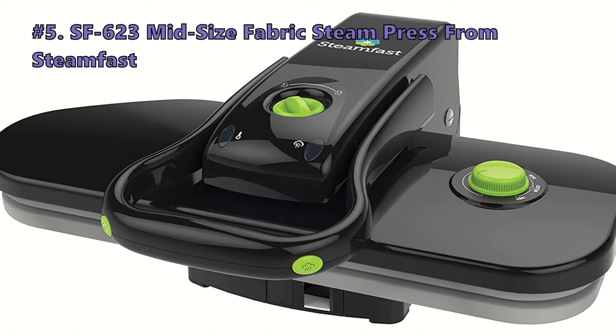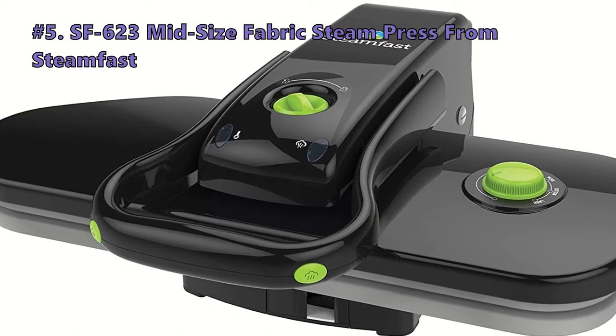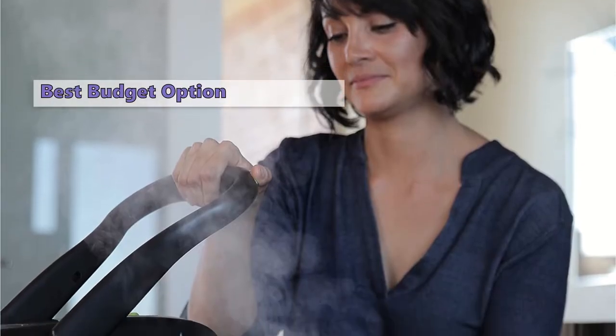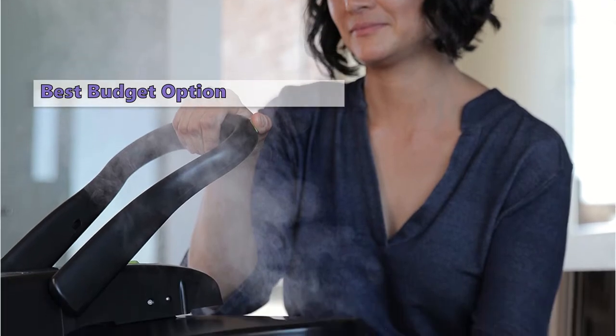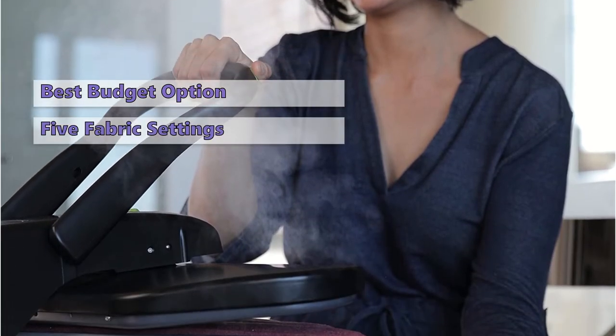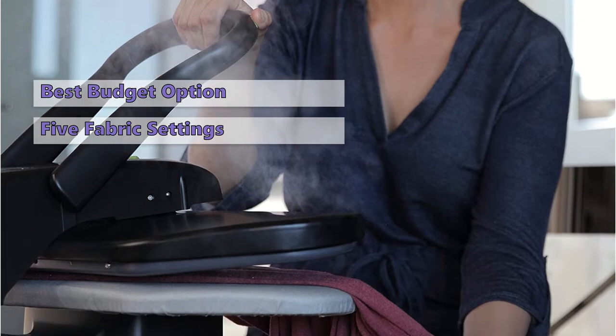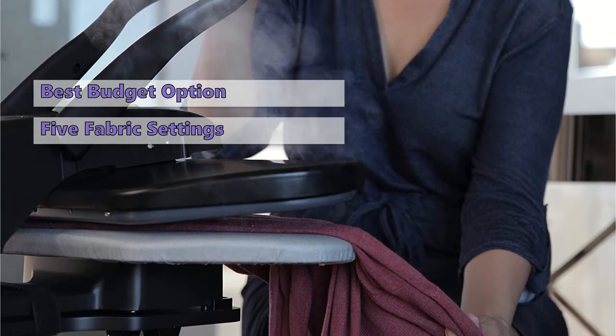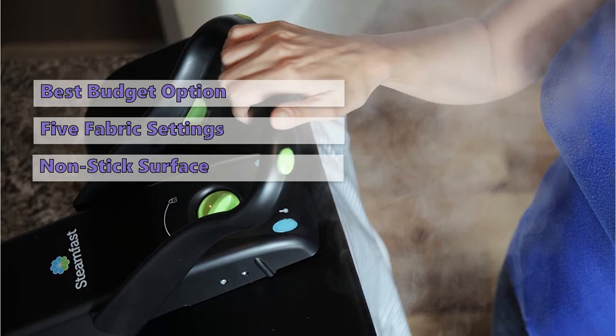We start out the list with the Steamfast SF-623 mid-size fabric steam press. This mid-sized steam press from Steamfast has the features you need for the best pressing results at home. It has five different fabric settings, making it easy to find the perfect setting for your fabrics.